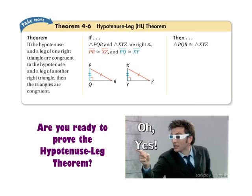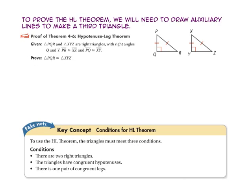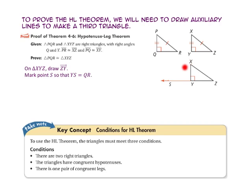Are you ready to prove the hypotenuse-leg theorem? To prove it, we will need to draw an auxiliary line to make a third triangle. Let's start by redrawing triangle XYZ and drawing ray ZY. Now, let's mark point S so that the length of segment YS is congruent to the length of segment QR. Connect points X and S so that triangle XYS is congruent to triangle PQR.